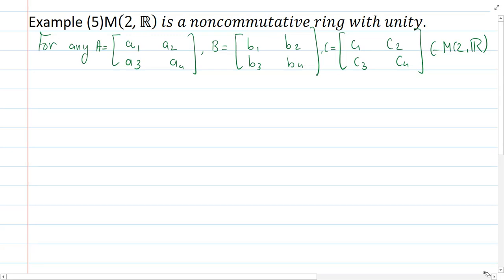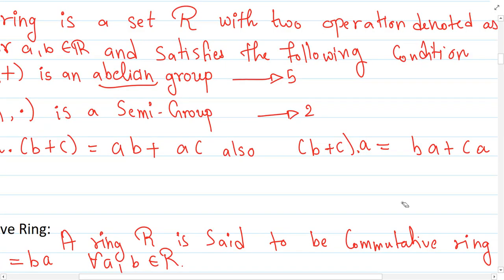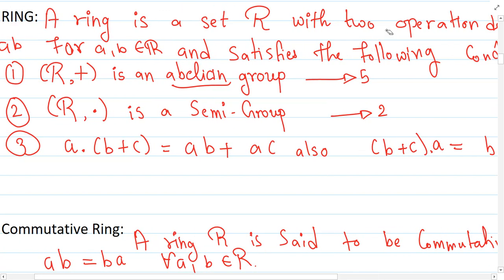Hello dear friends. In this video we'll be discussing that M₂(ℝ) is a non-commutative ring with unity. I have not given the definition of the ring yet — I will be making a full series on ring theory in detail — but for now I want to discuss this particular example for my students. A ring is a set with two operations such that under the first operation it is an abelian group, meaning five conditions hold.